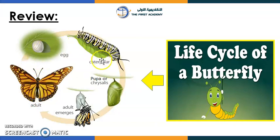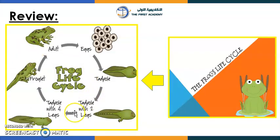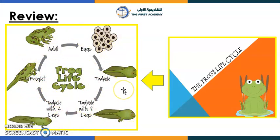So these are the stages — the life cycle of a butterfly. How many stages do we have? We have five stages. Now let's move to talk about the life cycle of a frog. Take your time and look over here — how many stages do we have?